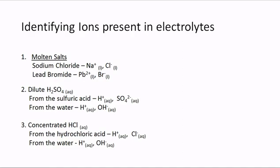You have to be able to identify the ions present in an electrolyte. An electrolyte could be a molten salt — you take a solid salt and heat it until it melts, producing ions that are able to move under the influence of an electric field. In sodium chloride, we have Na+ and Cl- ions. In the case of lead(II) bromide, we have Pb2+ ions and Br- ions. Note the state is liquid.